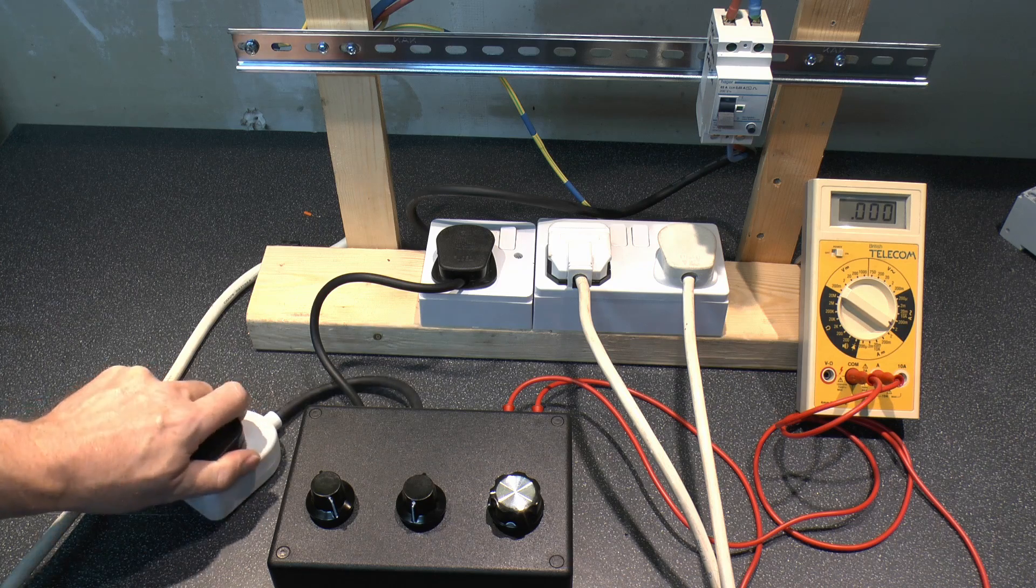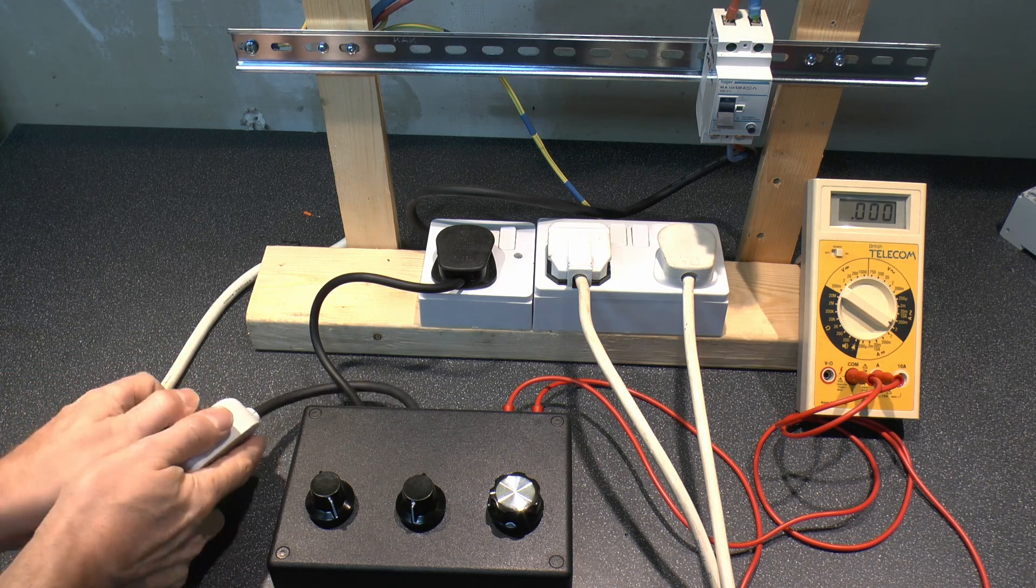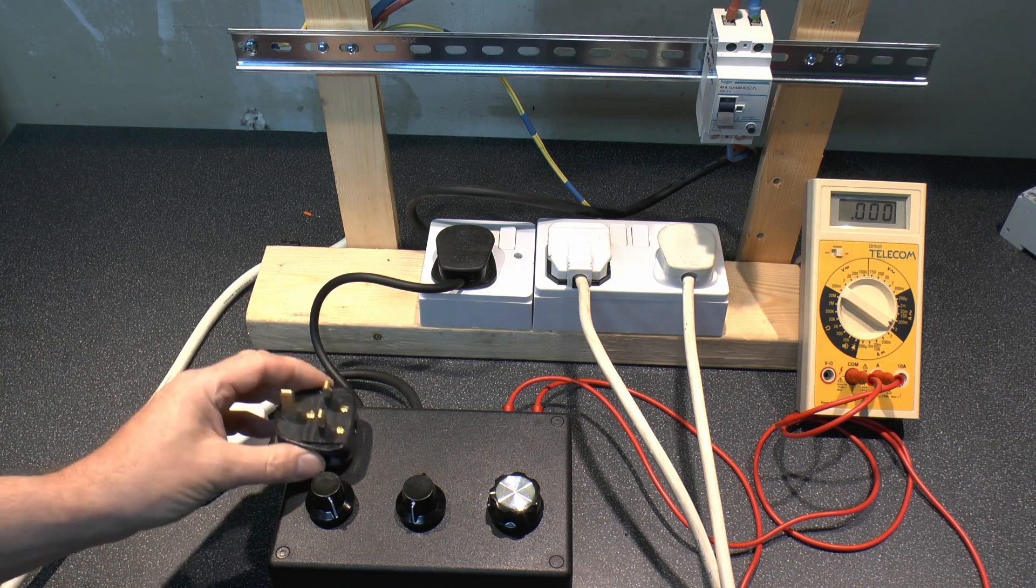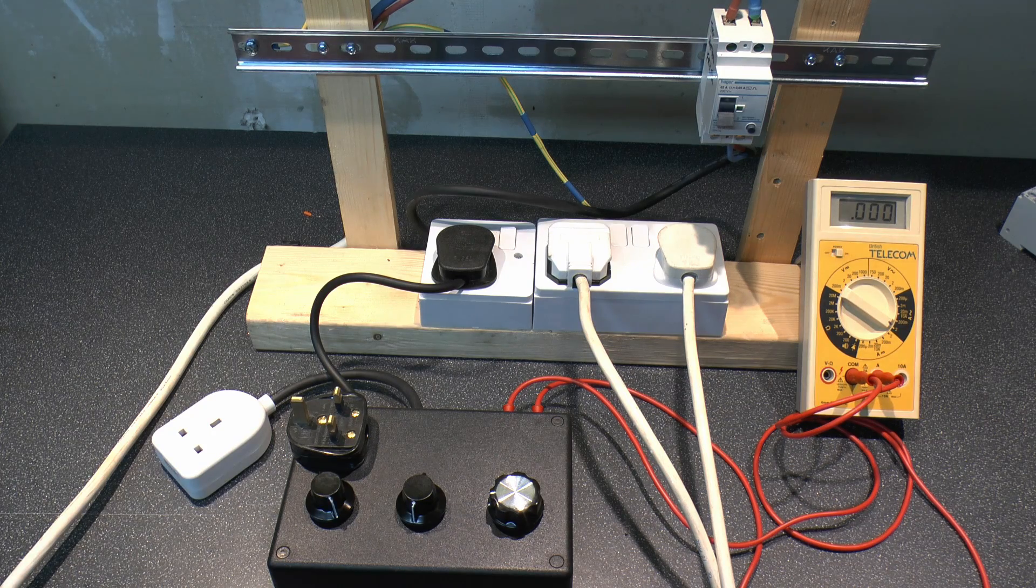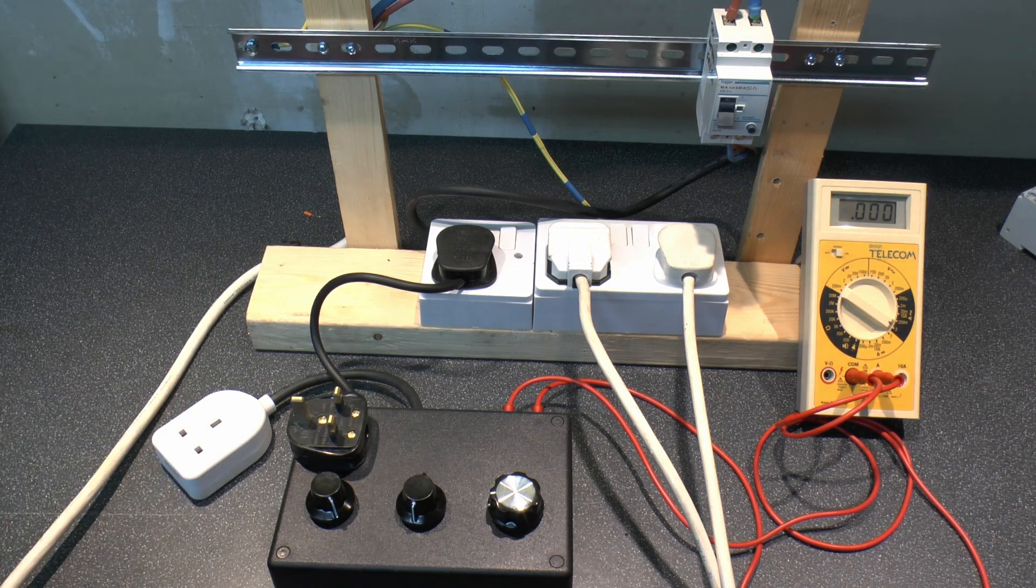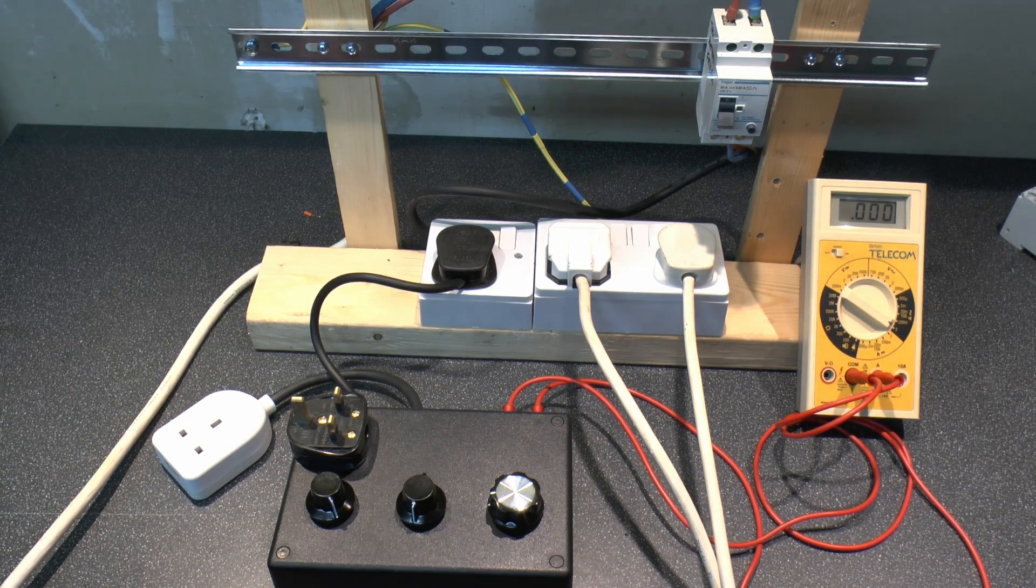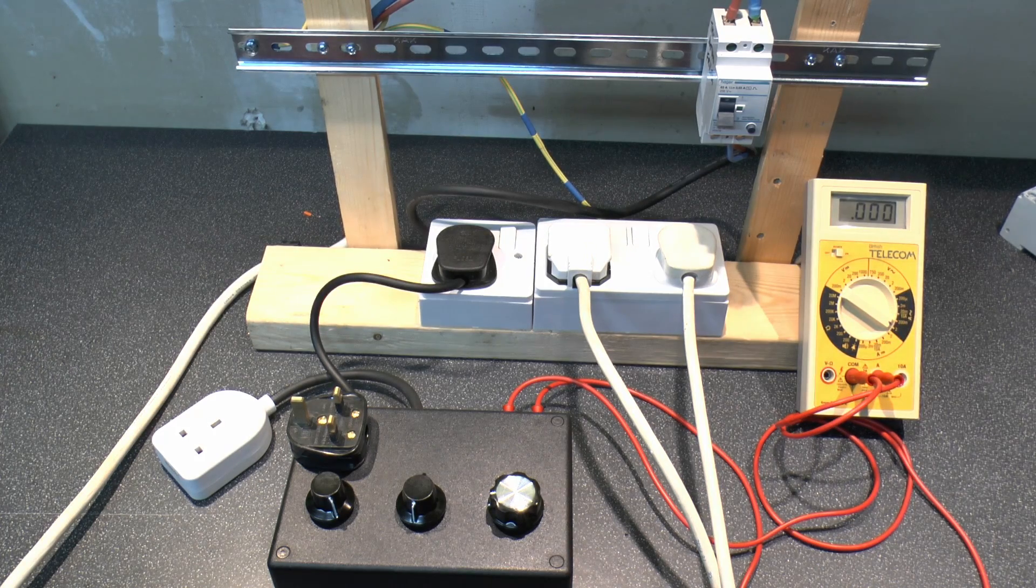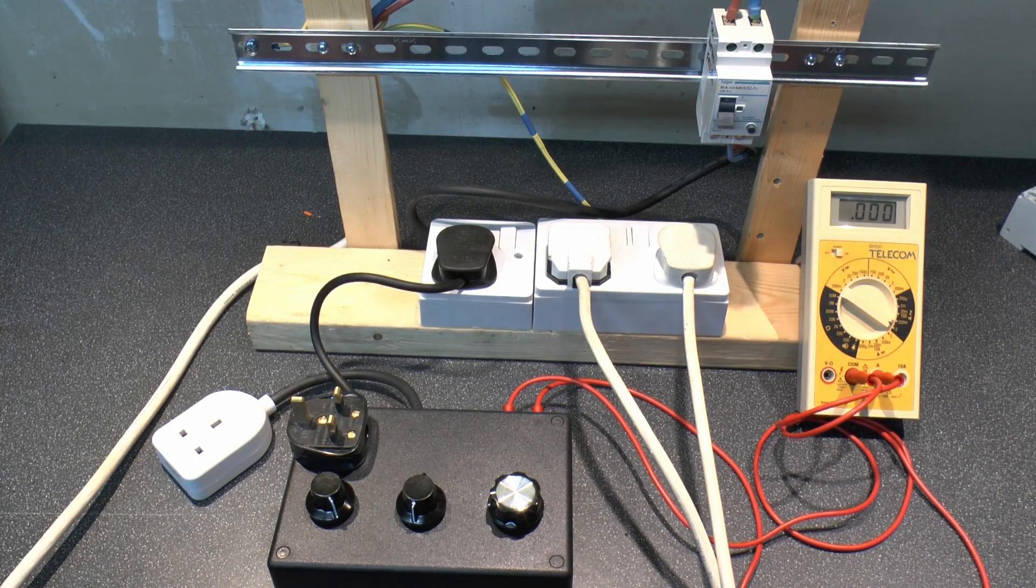Because even things like lighting now, LED lighting of course, it's got at least a rectifier or some kind of diode in there. The LED itself, of course, is a diode.